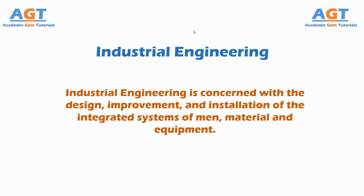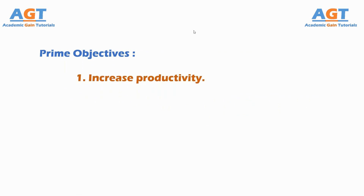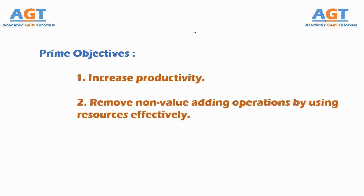Now, let's have a look at the prime objectives served by industrial engineering. In any concerned organization, industrial engineers serve two core purposes: number one, increase productivity, and number two, remove the non-value-adding operations by using resources effectively.